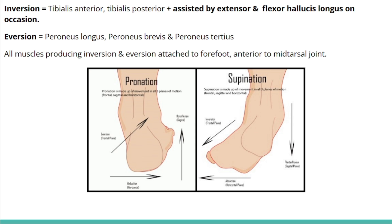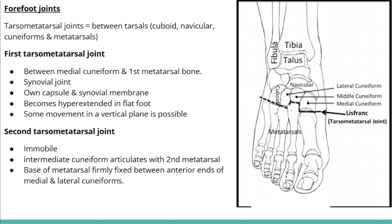All muscles producing inversion and eversion are attached to the forefoot, anterior to the mid-tarsal joint. For inversion, tendons located more medially contribute, namely tibialis anterior and tibialis posterior, assisted by extensor and flexor hallucis longus. For eversion, muscles and tendons located laterally contribute, including peroneus longus, peroneus brevis, and peroneus tertius.